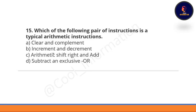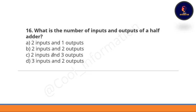Question 15: Which of the following pairs of instructions is a typical arithmetic instruction? Option A: clear and complement, option B: increment and decrement, option C: arithmetic shift right and add, option D: subtract and exclusive OR. The correct option is C, which is arithmetic shift right and add.